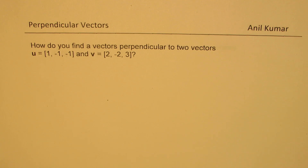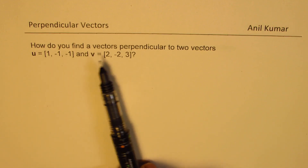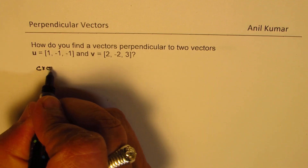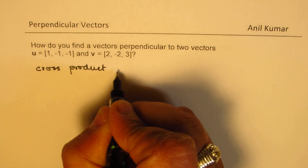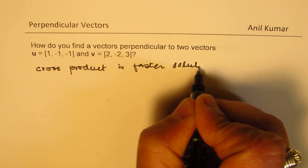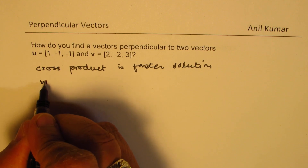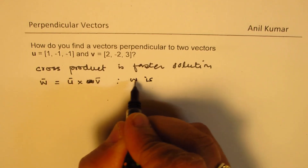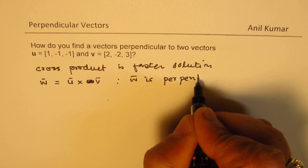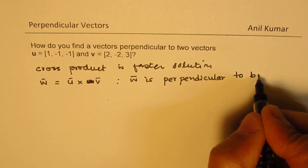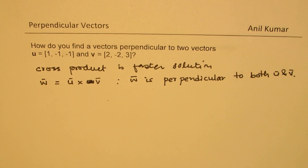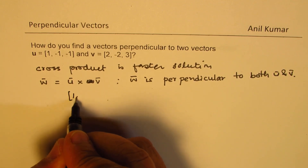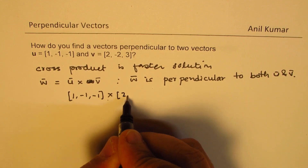Now let us move on and see what to do when two vectors are given. When given two vectors, you could use dot product to find vectors perpendicular to both; however, cross product is a better and faster solution. So we are going to use cross product: if w is a vector equal to u cross v, then w is perpendicular to both u and v. Let us find the cross product of these two vectors.